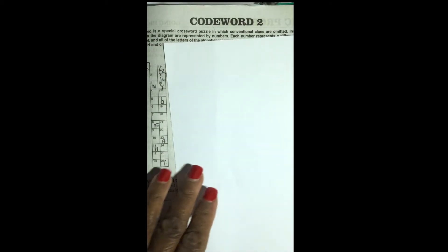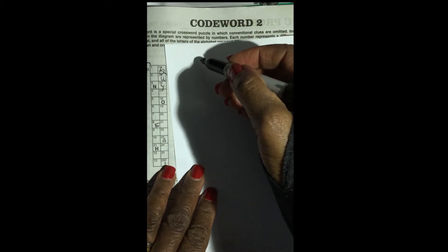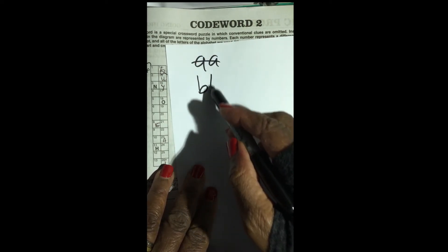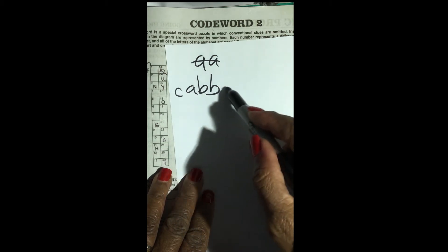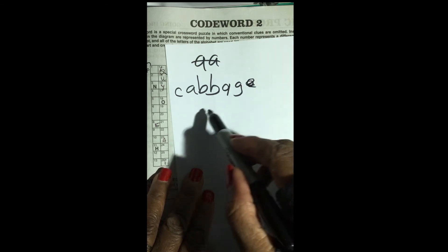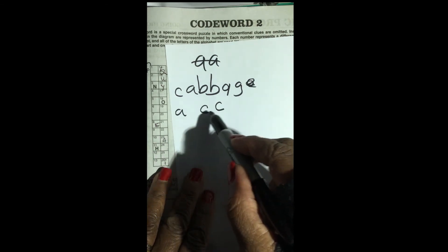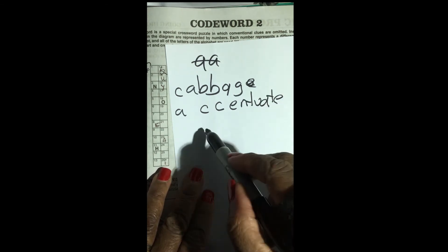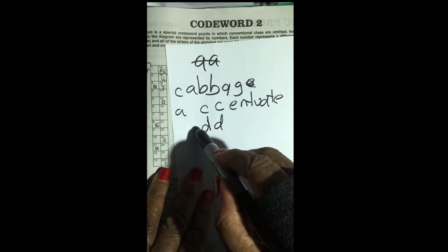I simply go through the alphabet. Starting with A — no. B can be a double letter; you could have a word like cabbage. C — sure, you could have accentuate. D — you could have a word like add.